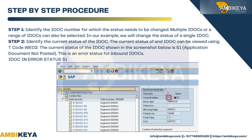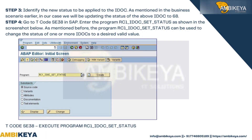The current status of the IDoc shown in the screenshot is 51 (Application Document Not Posted), which is an error status for inbound IDocs. Step 3: Identify the new status to be applied to the IDoc. As mentioned in the business scenario, in our case we will be updating the status of the above IDoc to 68.